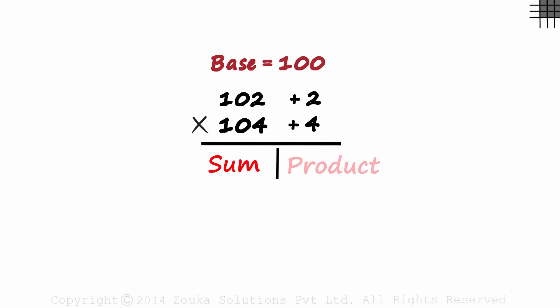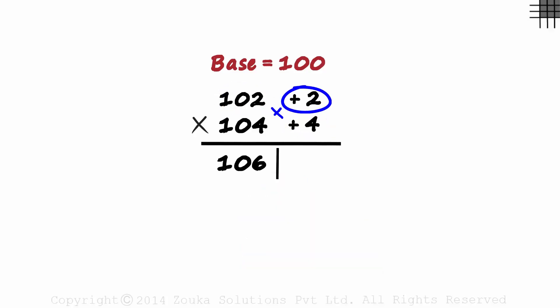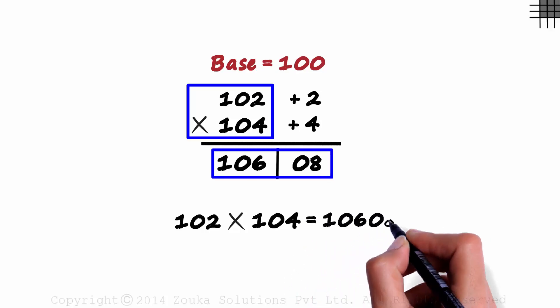Sum on the left and the product on the right. 102 plus 4 is 106. And 2 times 4 is 8. But wait, as there are two zeros in the base, the number of digits on the right will be 2. So we write 0 8 and not 8. 102 times 104 will equal 10608.